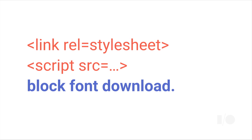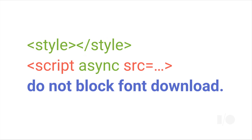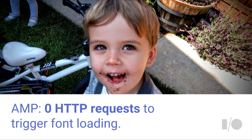In code, that means if you have link rel stylesheet or a script src, those will slow down fonts from even being started on the network. AMP has certain rules about how it likes HTML to look. You can have style sheets, but they have to be inline in the style tag. There can be script tags, but they need to have the async attribute, which takes them out of the critical path, and the browser will happily try to render the page and download the fonts. The result is that AMP can initiate the HTTP request for fonts with zero HTTP requests in the critical path, which is a big improvement for performance.